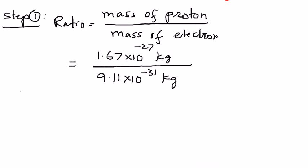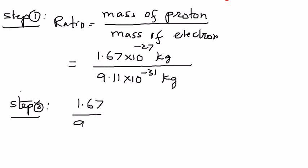It is now a matter of simplifying the math, and we will write that as step number 2. We have 1.67 divided by 9.11 for the numbers part, times 10 to the power of negative 27 already in the numerator, and 10 to the power of negative 31 in the denominator. When we bring it up to the numerator, we can express that as a positive quantity, therefore 10 to the power of positive 31.